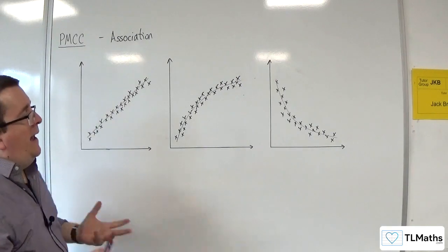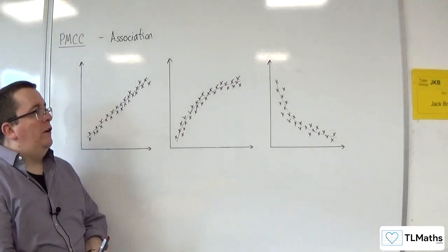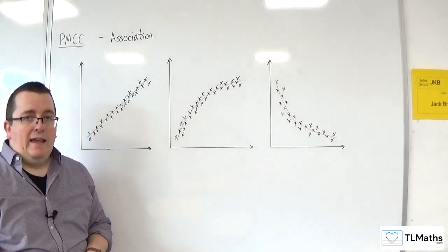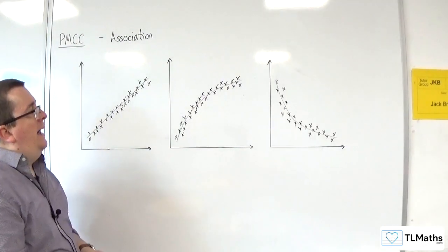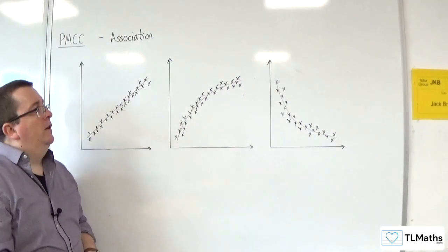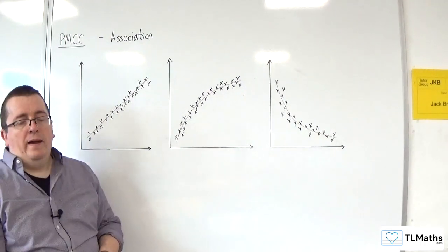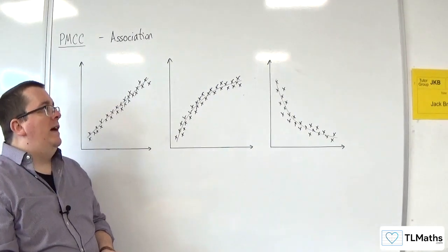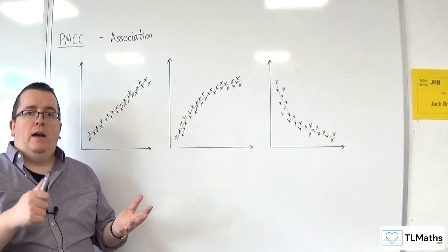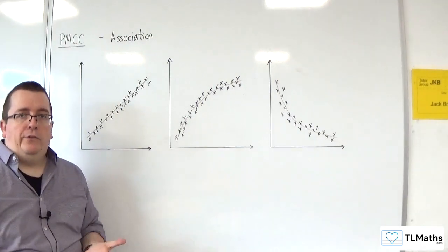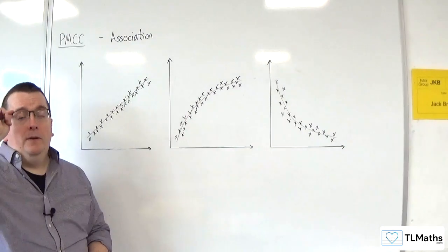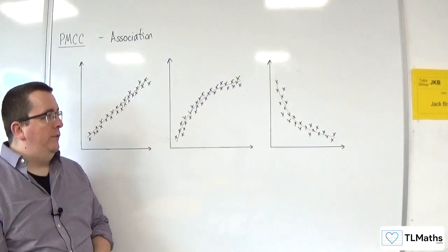You can have measures of how associated the data is to one another. You could use rank correlation — Spearman's rank correlation coefficient — in order to determine that. This can be used when the data has non-linear association, and we will look at Spearman's rank correlation coefficient later on in the playlist.